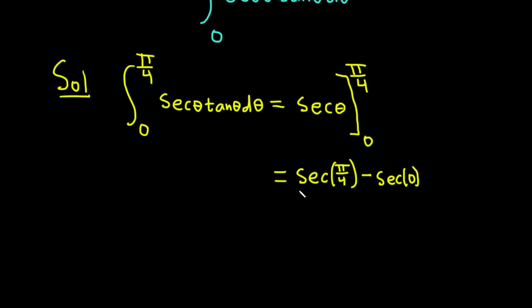Secant is 1 over cosine. So if you're not sure what the secant of pi over 4 is, you can write everything in terms of cosines. So this is 1 over cosine of pi over 4 minus 1 over cosine of 0. Cosine of pi over 4 is the square root of 2 over 2. So this is 1 over parentheses square root of 2 over 2 minus 1 over cosine of 0 which is 1.